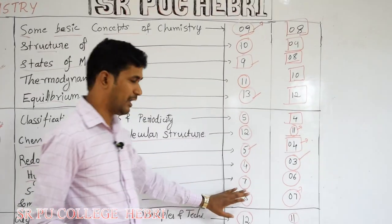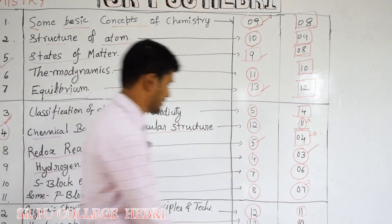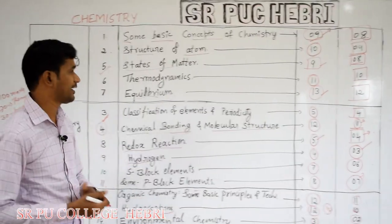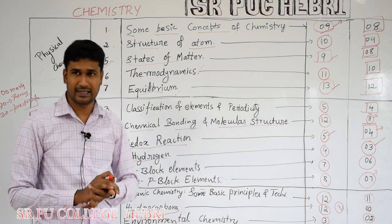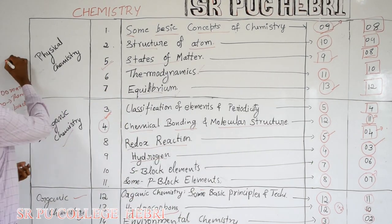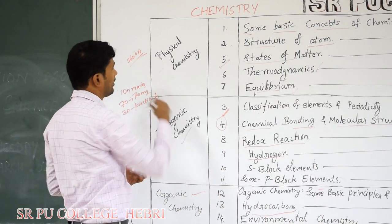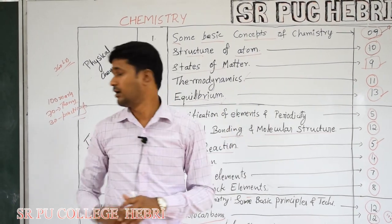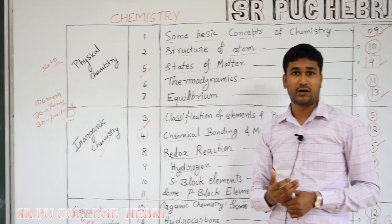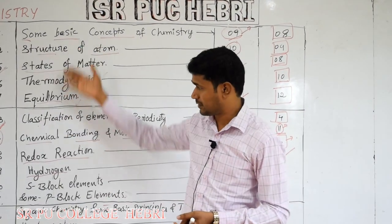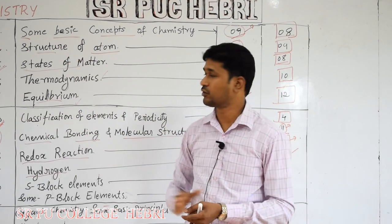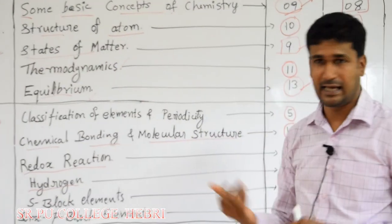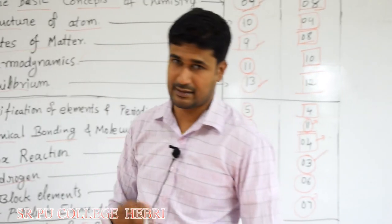The total number of hours allotted for all these chapters is 120. So the total number of hours allotted for chemistry is 120 — even for physics it is 120, and for biology it is also 120 hours. You are studying entire science in 360 hours in first year pre-university course. The names of all chapters and topics are given here — once you go through all of them. Regarding examination practicals, I will discuss that in another video. Thank you.